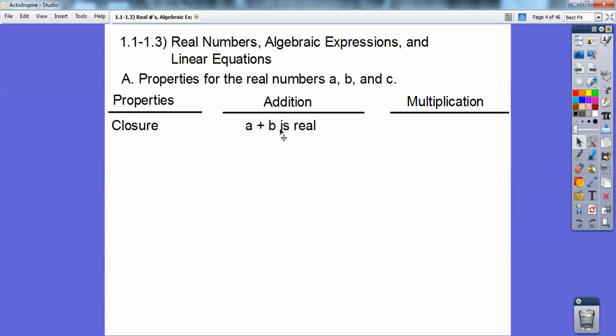It just says when you add any two real numbers, because it says they're real right here, it's going to give you another real number. Same for multiplication. If you multiply any two real numbers, then it's going to be real. That's called the closure property.